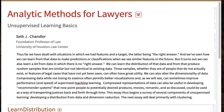But it turns out we can also learn a lot from data in which there is no right answer. We can learn the distribution of that data, and from that generate random samples that are similar to, but not identical to, existing data. These samples, whether they are of people that do not exist, or features of legal cases that have not yet been seen, can often have great utility. We can also reduce the dimensionality of data, and compressing data while not losing its essence often permits better visualizations and can sometimes improve performance and speed of supervised machine learning.